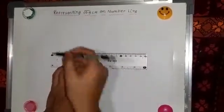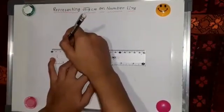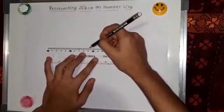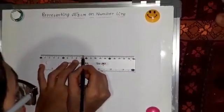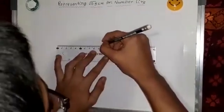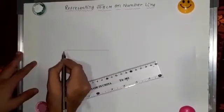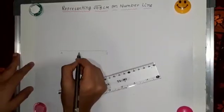So the first step, make a line AB of 9.3 cm. AB of 9.3 cm.